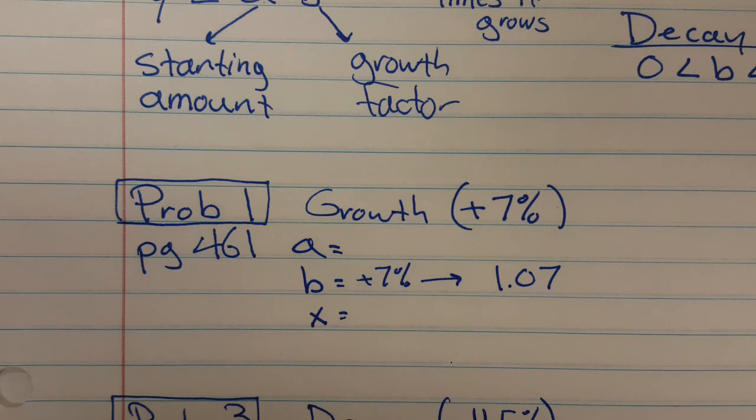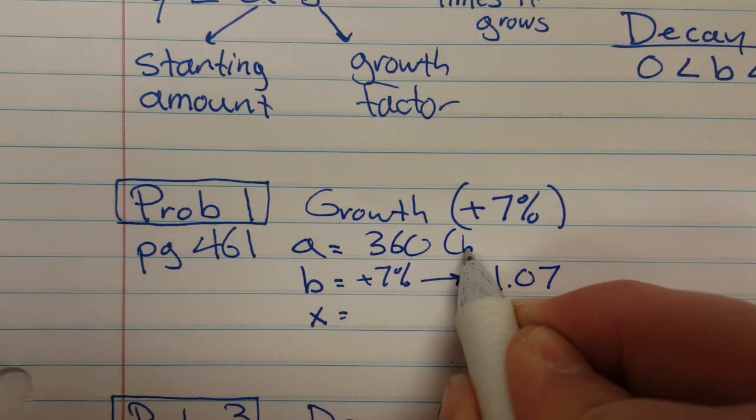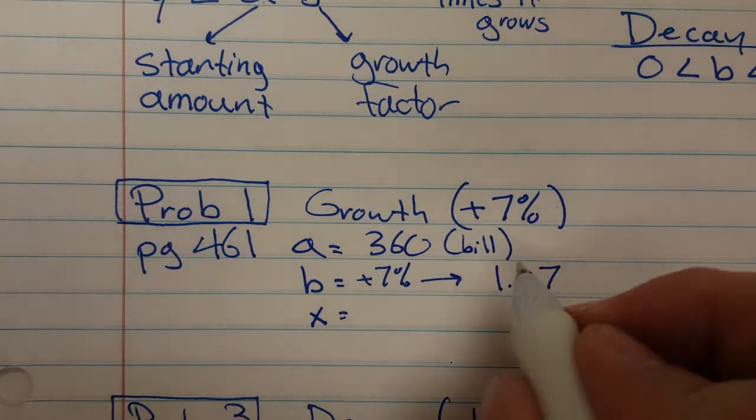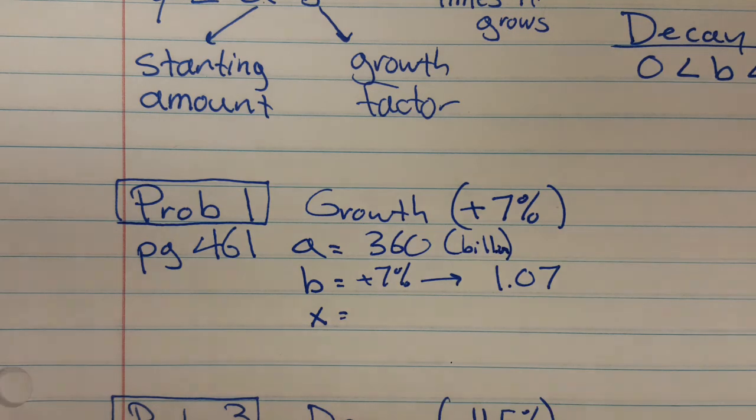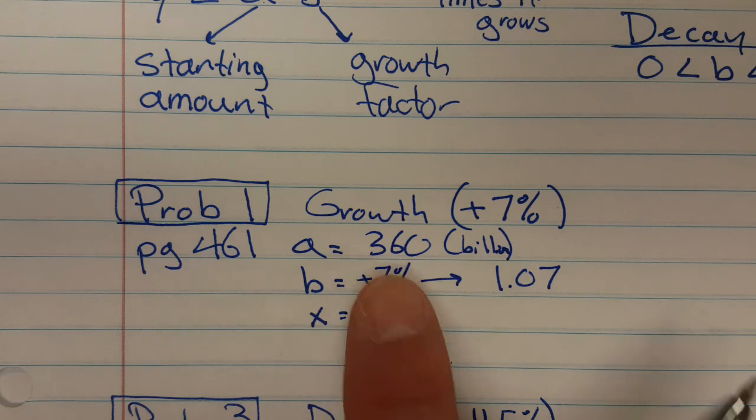And it said that in 2005, they spent about $360 billion on food, or on restaurants. Excuse me, there we go. So I'm just going to use 360. If I just keep the word billion attached as a label, I can just use 360.